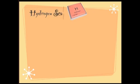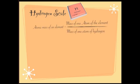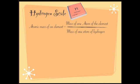First, let's discuss the hydrogen scale. In the hydrogen scale, the mass of one hydrogen atom is taken as the standard. We take another element and see how much heavier it is compared to one atom of hydrogen. The formula is: atomic mass of an element = mass of one atom of the element divided by mass of one atom of hydrogen.